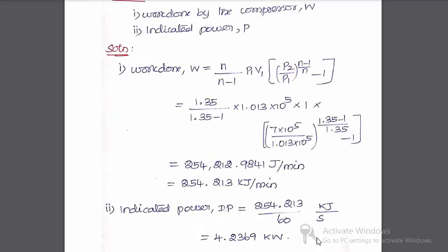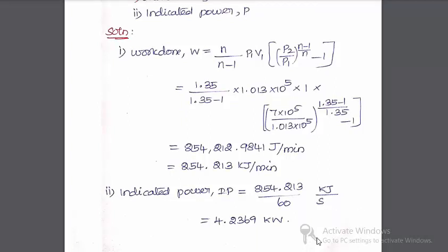Indicated power with the unit of kilowatt: work done in terms of kJ per minute, and kJ per second is kilowatt. Converting by dividing by 60, we get 254.213 divided by 60 equals 4.2369 kilowatt. Therefore, indicated power value is 4.2369 kW.